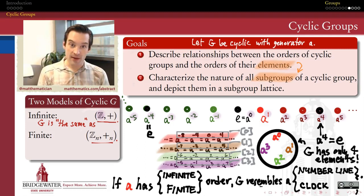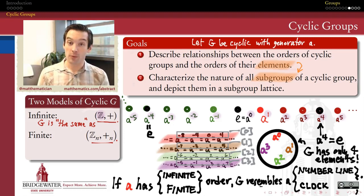So all of that is to say that anytime I think about cyclic groups, these are the two pictures that I have in my mind's eye. If it's an infinite cyclic group, it looks to me like the integers. If it's a finite cyclic group, it looks to me like the integers modulo n, where n is the order of the generator. So keep these pictures in mind as we go forward and explore these goals. What are some relationships between the order of the group and the order of elements, and then what can we say about the existence and the nature of subgroups inside of a cyclic group.